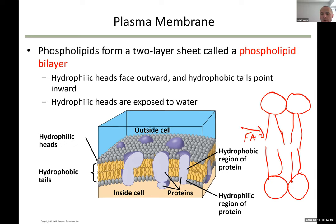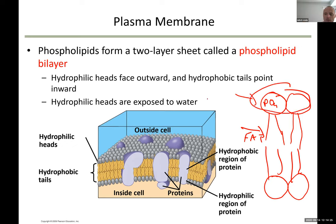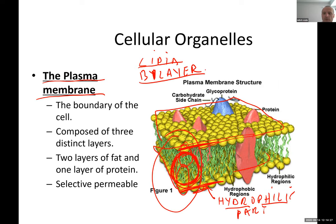The fat portion is the hydrophobic part and the phosphate portion is the hydrophilic part. If you notice on the cells toward the outside, there are small heads sticking out — these are actually proteins embedded in the plasma membrane. There are a bunch of proteins encapsulated right inside the cell membrane.